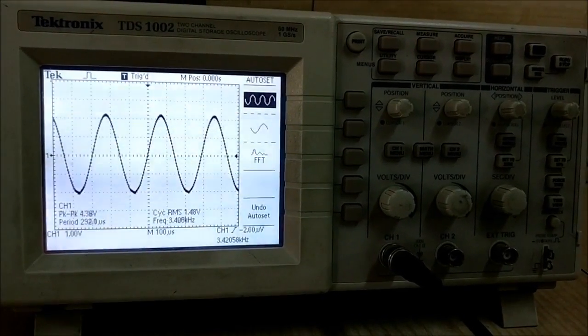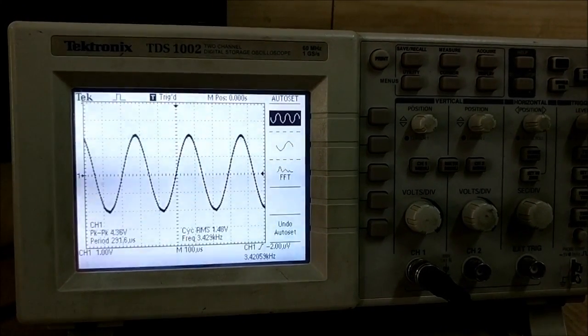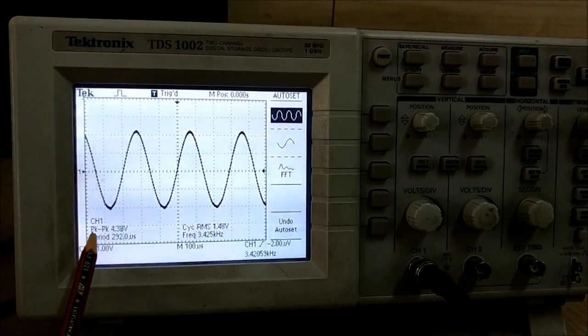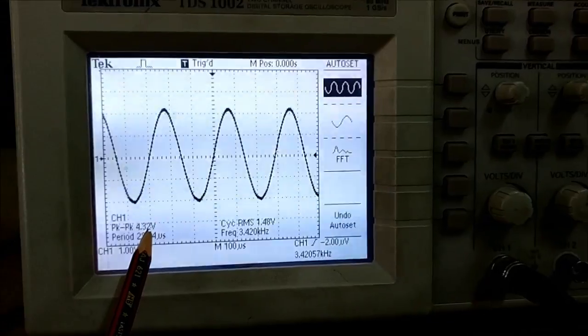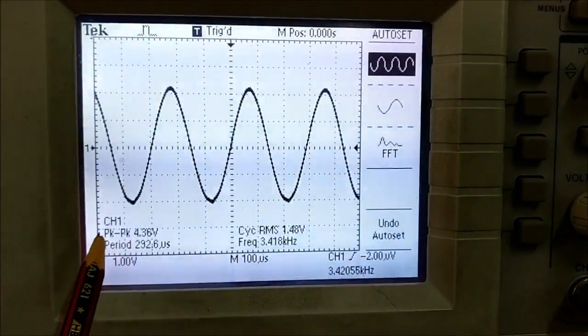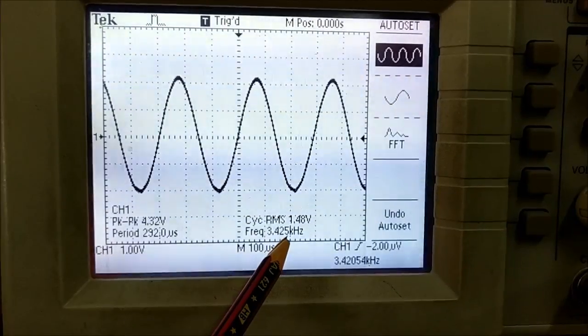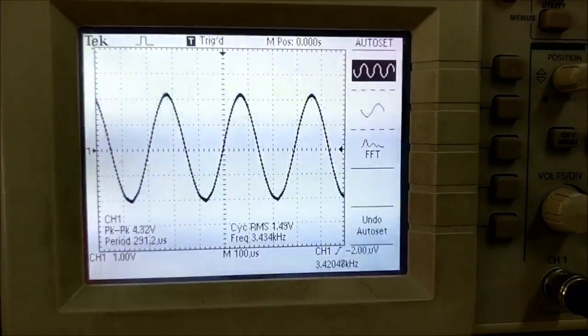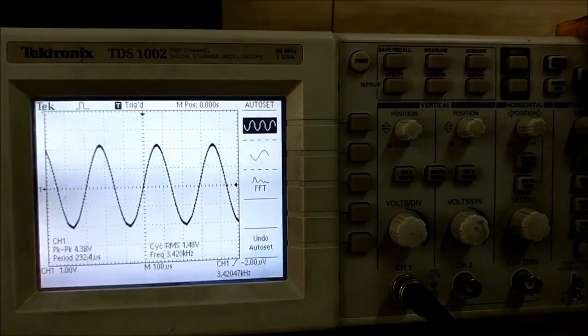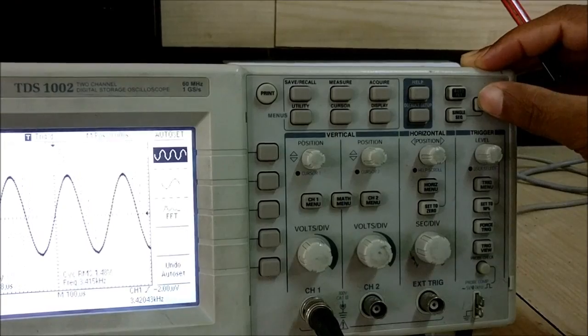Now I want to check the amplitude of this signal. By default, we can see the peak to peak voltage is 4.36V and the frequency is 3.425 kHz. To measure accurately, we have to stop because the frequency is continuously changing. Press the button stop.